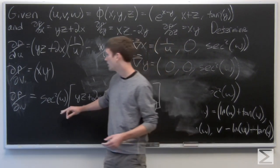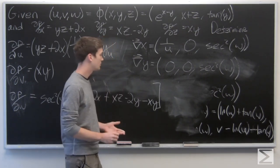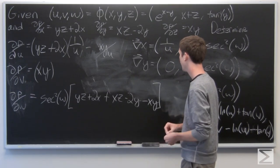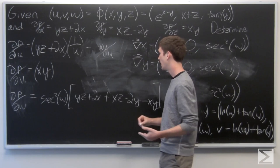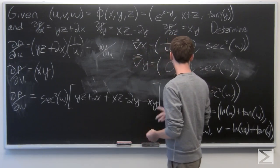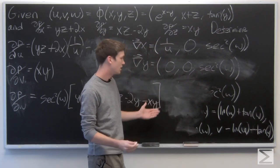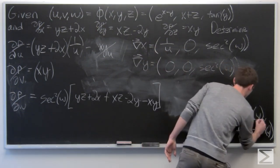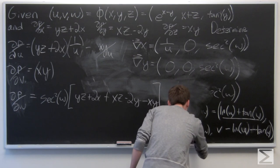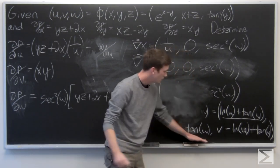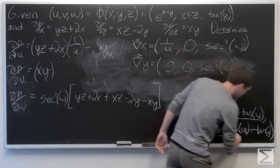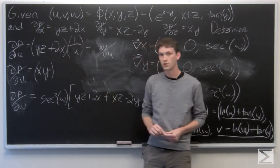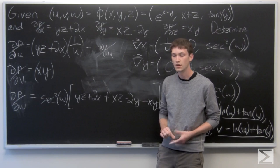Now we want to evaluate this in terms of u, v, and w. We know that x, y, and z are given by our inverse function: x is the natural log of u plus tangent of w, y is tangent of w, and z is v minus the natural log of u minus tangent of w. We substitute these into each of the partial derivatives to get our solution in terms of u, v, and w, which we can complete in the next video.